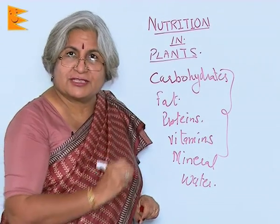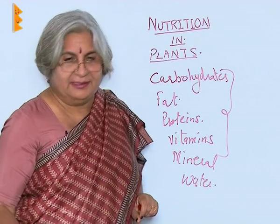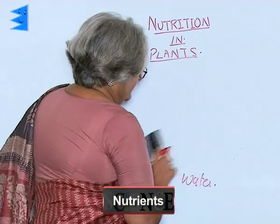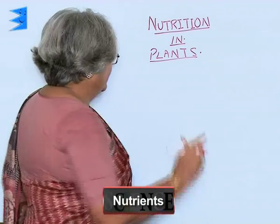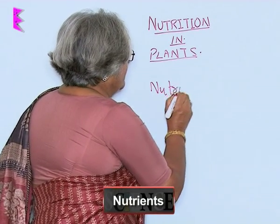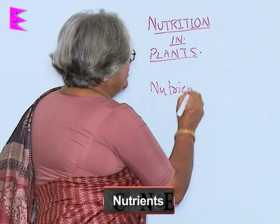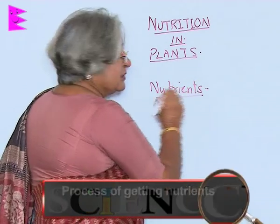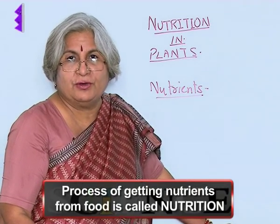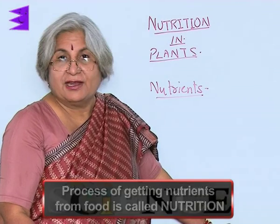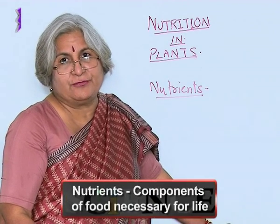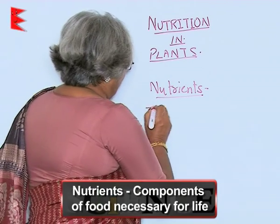These are all components of food and they are necessary for life. So what are these components of food called? They are called nutrients. So that is why the word nutrition — the process of getting nutrients from food is nutrition. And how will we define nutrients? The components of food necessary for life.